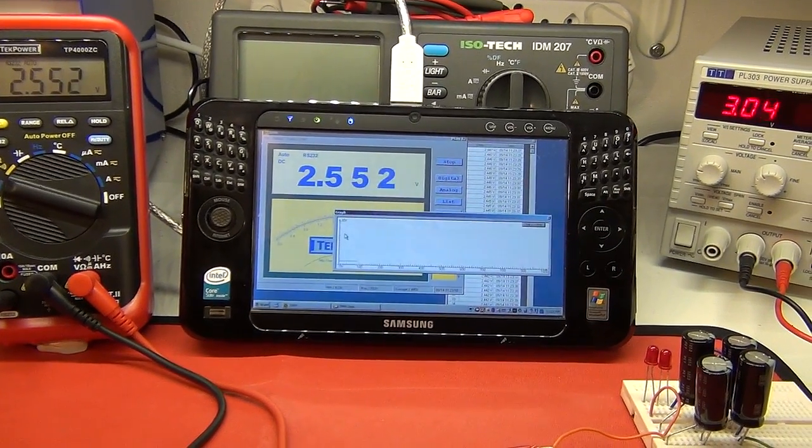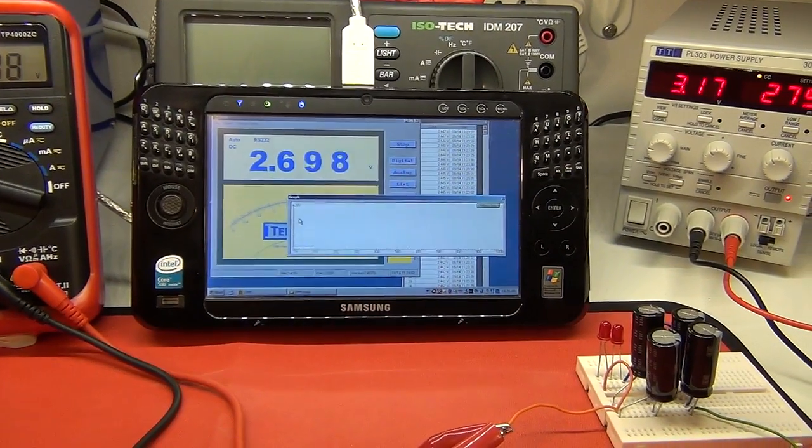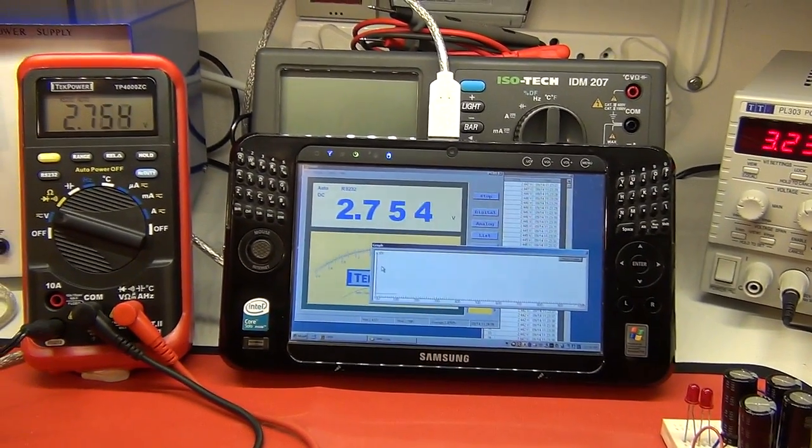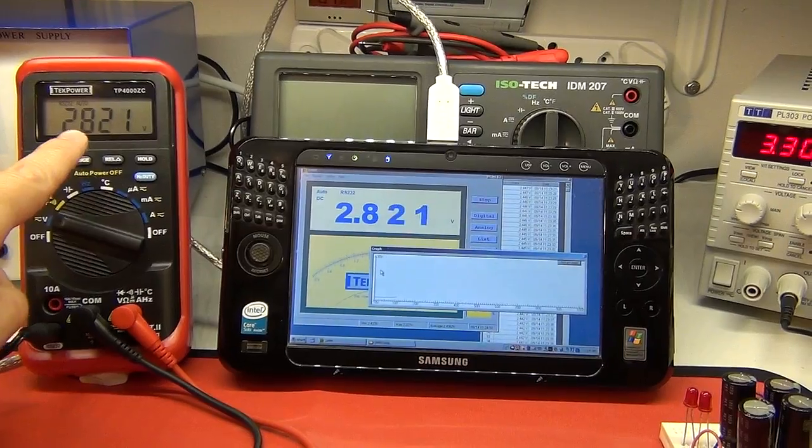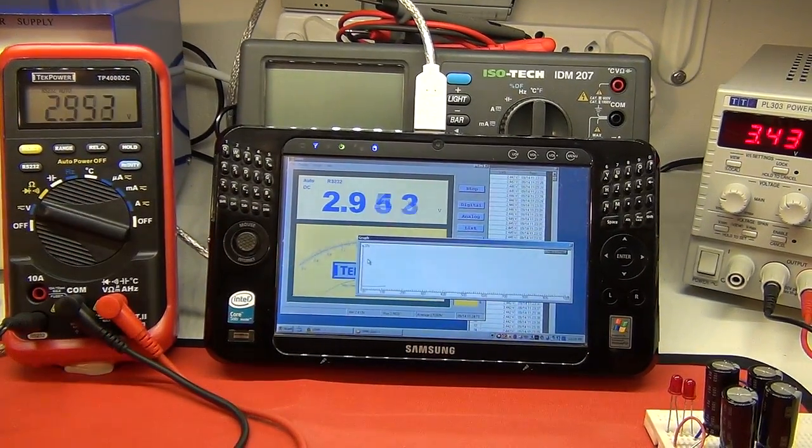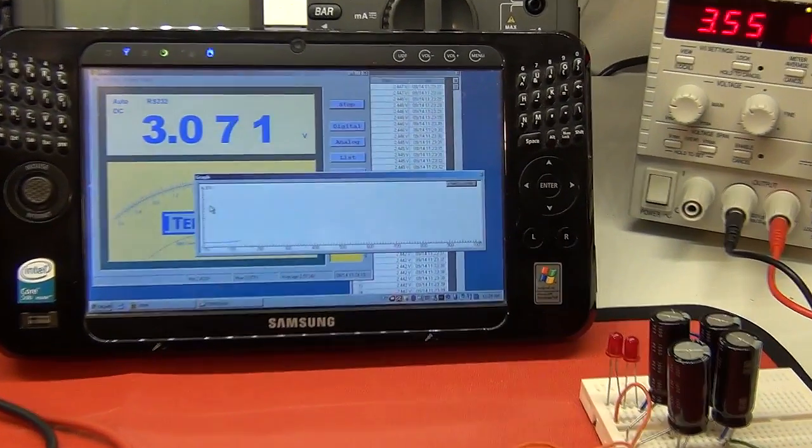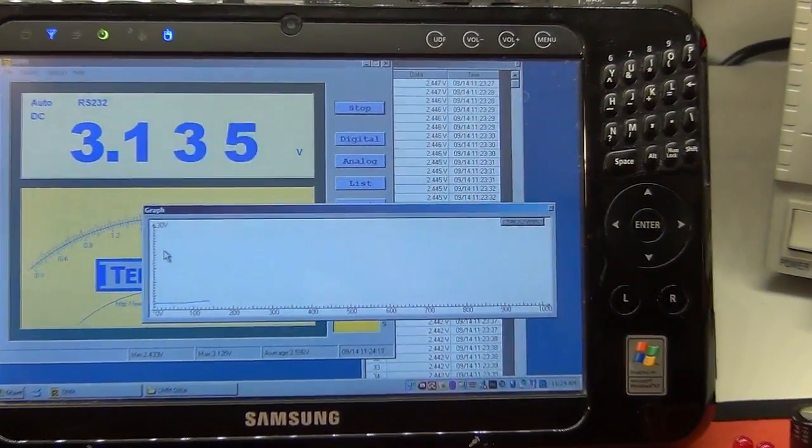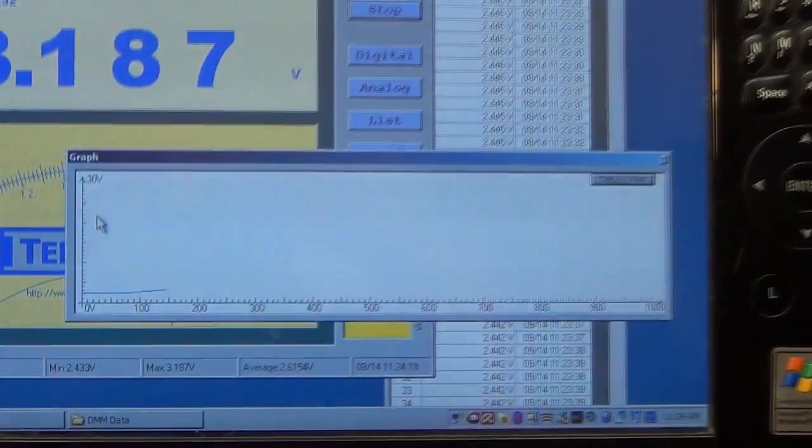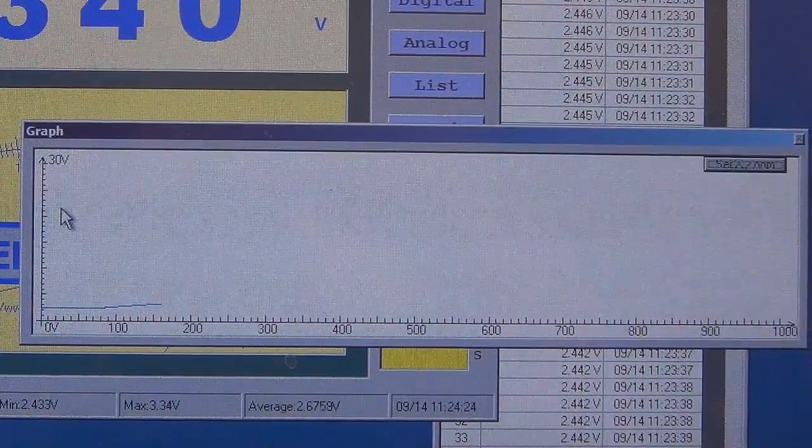I've switched on the power supply. And as you can see, it's updating immediately, instantaneously from the meter. And in the background, if we go and have a look, obviously the list data is being written there to the list. And then on the graph, because you've got it scaled, you can actually see what's going on.